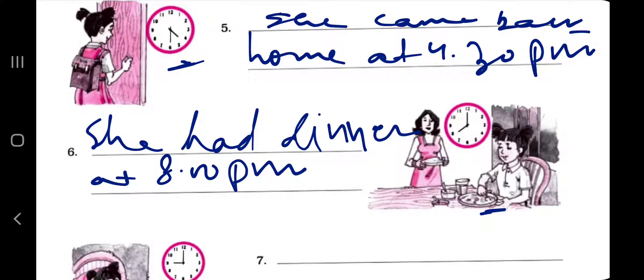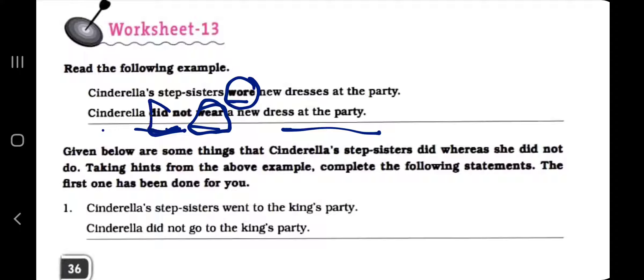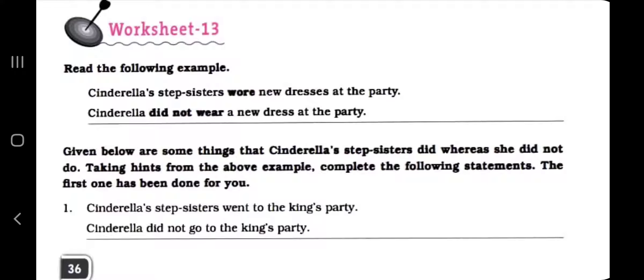Worksheet 12 is finished. Now worksheet 13: read the following sample. Cinderella's stepsisters wore new dresses at the party; Cinderella did not wear a new dress at the party. Focus on the word 'wore' — it is past tense. When the sentence turns into negative using 'did not,' we use the root verb, the base form. Since it is past tense, we use the V1 form. So 'did not wear' — in place of 'wore' it becomes 'wear.'